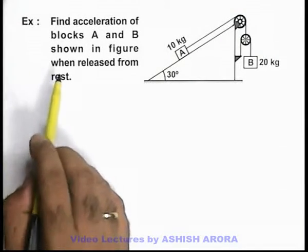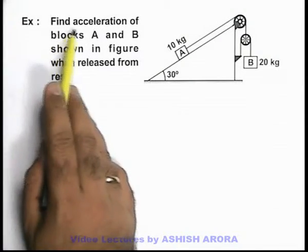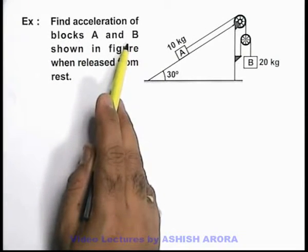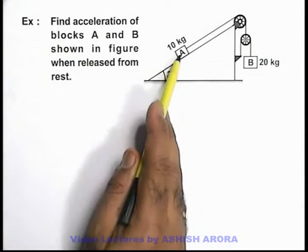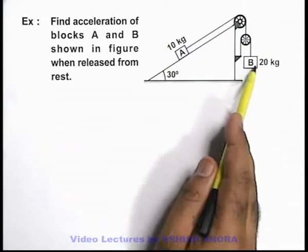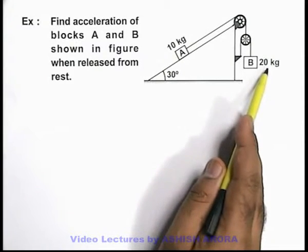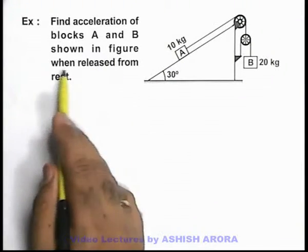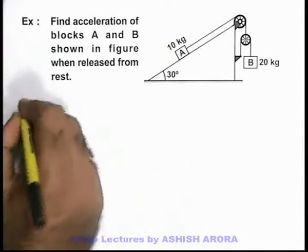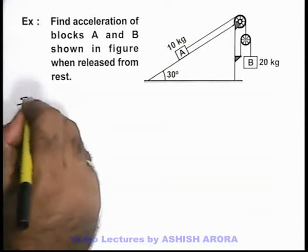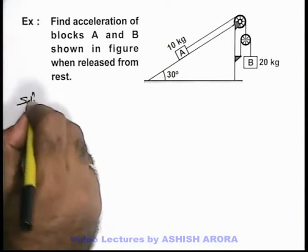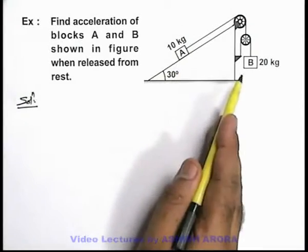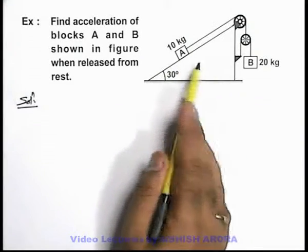In this example we're required to find the acceleration of blocks A and B. It is given that block A is of mass 10 kg and block B is of 20 kg. We're required to find the acceleration when they're released from rest. The first thing we analyze is all the forces acting on the block.